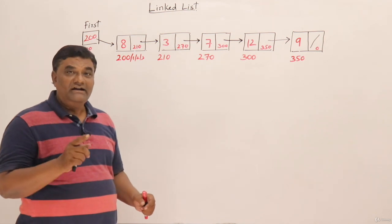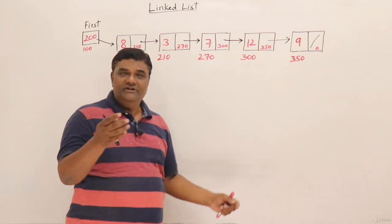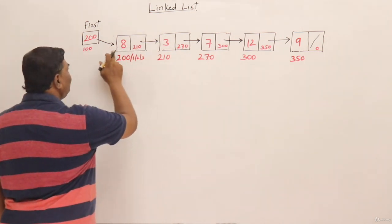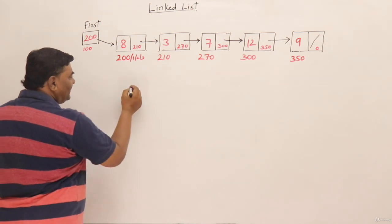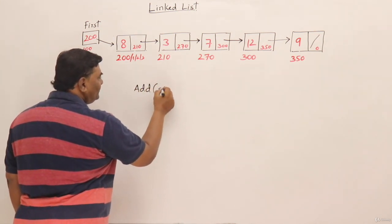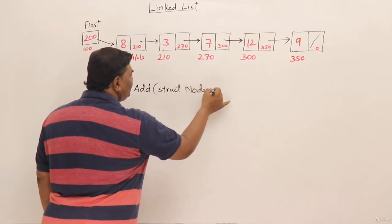For adding, I should traverse all these nodes. We know very well that we need a pointer for traversing all the nodes. That pointer should start from first node. I will call the function name as add and it takes a pointer to node type struct node star P. This P must be first node.